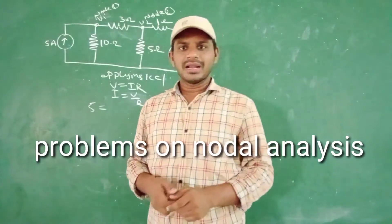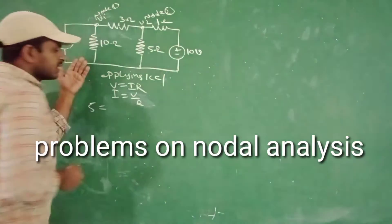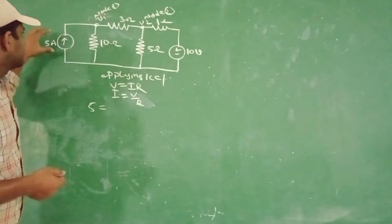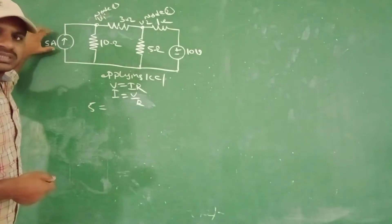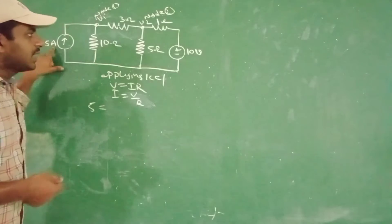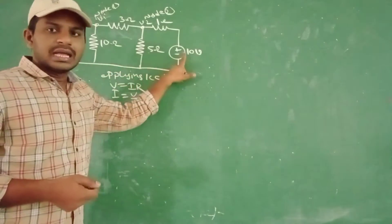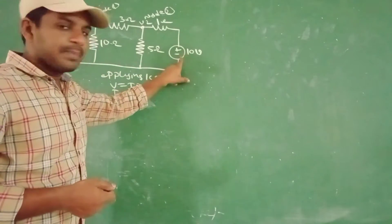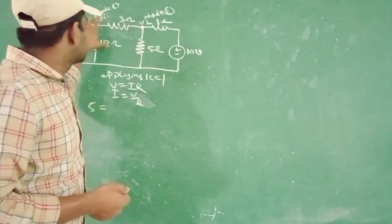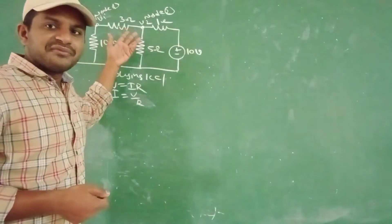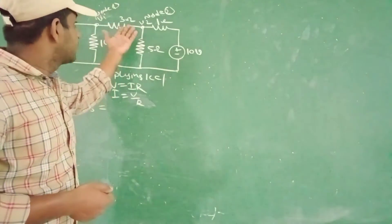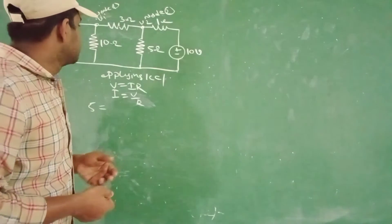Coming to the nodal analysis here, the problem will be given like this. Here, some independent current source is given — that is 5 amperes — and also a 10 volt independent voltage source is given here, along with different types of various resistances from the given circuit diagram.